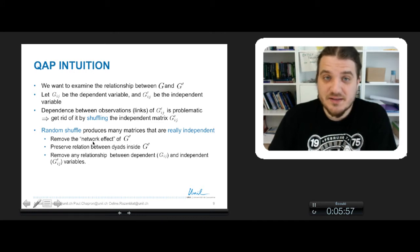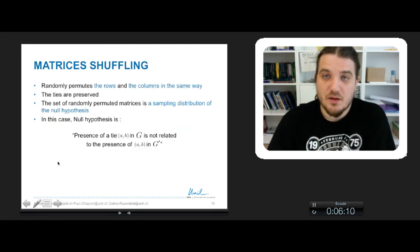But shuffling the matrix of G' will remove any relationship between the dependent variable, which is the adjacency matrix of G, and the independent variable, that is the adjacency matrix of G'.